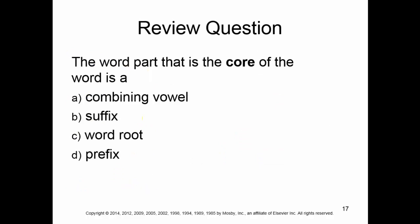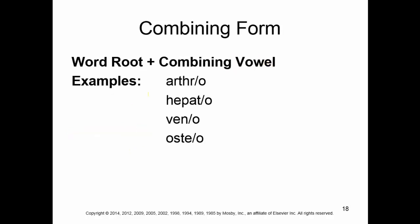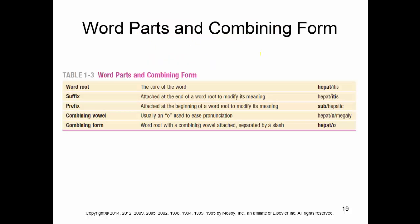Review question: the word part that is the core of a word is going to be the root. I always like to think that the root goes into the core — the core of the word is the word root. Combining form is the word root plus the combining vowel. So for example: arthro, hepato, veno, osteo — that is what we call the combining form.